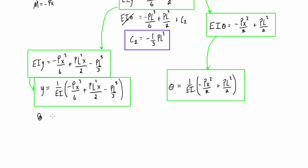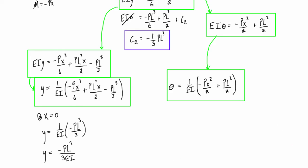For the maximum deflection at X equals 0: the first two terms go to zero, leaving Y equals (1/EI) times negative PL³/3. So Y at X equals 0 is negative PL³/3EI. This is the answer to the original question. As long as we know the point load, length, E, and I, we can get the actual deflection in millimeters, or express it in terms of P and L.